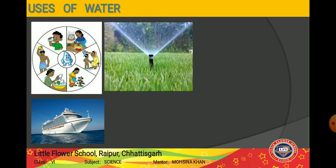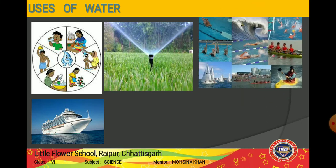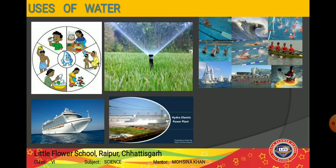Water is also very very necessary for the growth and development of plants. Plants cannot grow without water because they cannot do photosynthesis without it, and ultimately they will die. Water also provides a medium for recreational sports like swimming, boating, water skiing, parasailing, and surfing — these are all water sports as you can see on your screen.